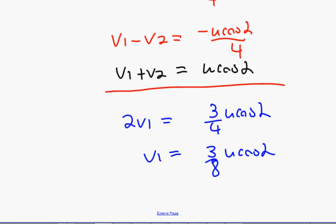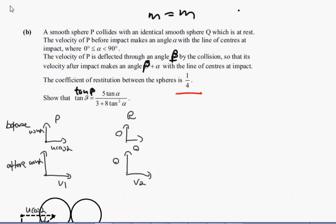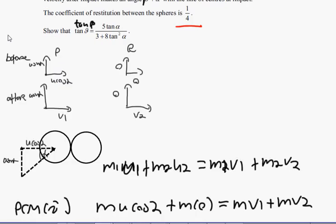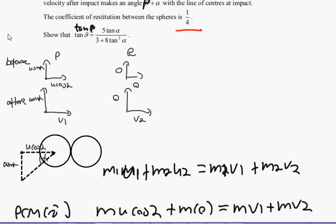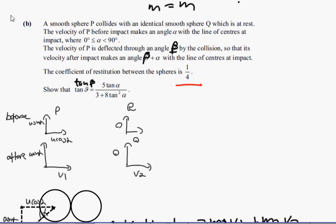Now we only need V1 in this question, because it's only talking about the deflection angle of particle P. So finding V2 is a waste of time and a waste of effort.